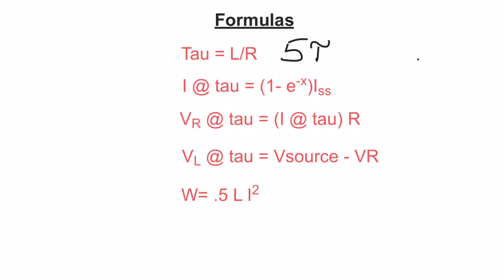Our next formula is current at tau — I at tau. If I want to work out my current at any particular time constant, I use: one minus e to the negative x, times the steady state current. That x is your time constant: negative one for the first, negative two for the second, negative three for the third, negative four for the fourth, negative five for the fifth. The one in front always stays the same regardless of time constant.